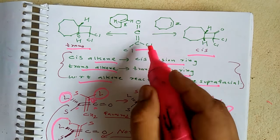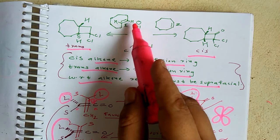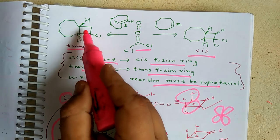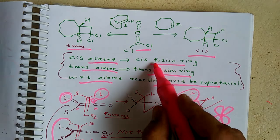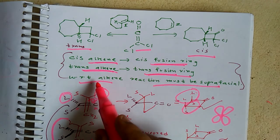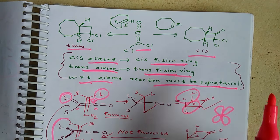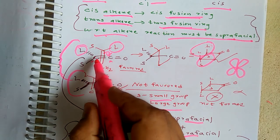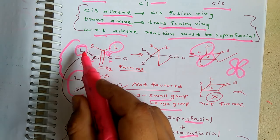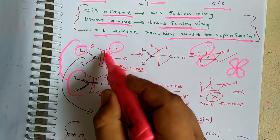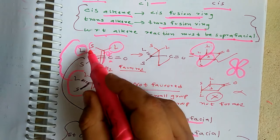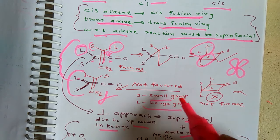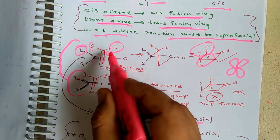Using dichloroketene with trans-cyclooctene gives trans-ring fusion, and with cis-cyclooctene gives cis-ring fusion. This confirms that with respect to the alkene, the reaction must be suprafacial. In the transition state, ketene with the large group and ketene with the small group are positioned to avoid steric hindrance. Large-large group combinations are disfavored, and the preferred TS forms when the small group of alkene faces the large group of ketene.